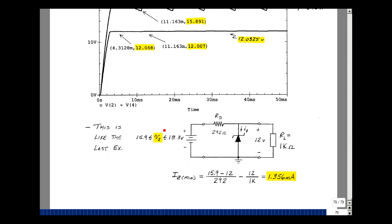The only variable I got is this one right here. What's the smallest value this current can have? Well, it's going to be when the battery is the smallest, because we're going to take this battery here, a 15.9 minus the 12 divided by the 292. That's the current in here. And then the load is constant. It's just going to be 12 volts divided by 1k. So if you subtract that off, what's left over is going into the Zener, and that's 1.356 milliamps. We do have enough current to get the Zener past what we call its knee, so we get a fairly constant voltage across the load.